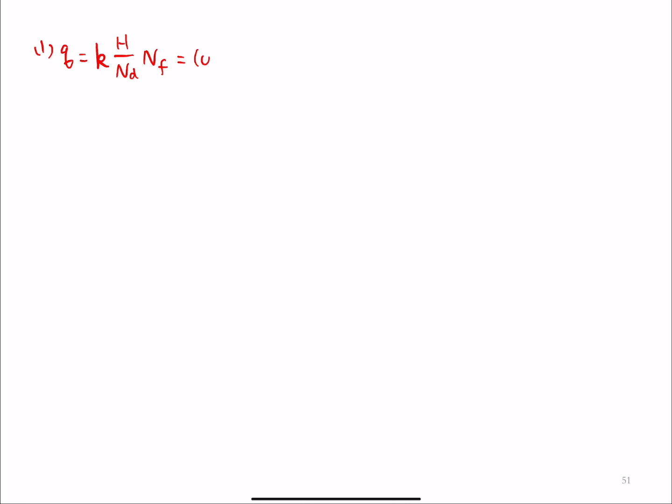So this is 0.002. And this is centimeter per second. So I'm going to convert that to meter per second. So this is from centimeter to meter conversion factor. Then H is 10, ND counted is 12, and NF is 5.